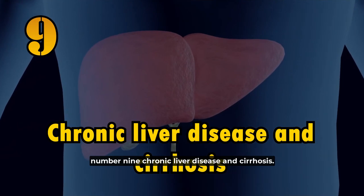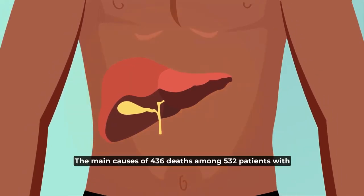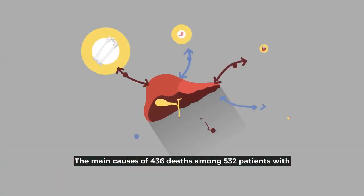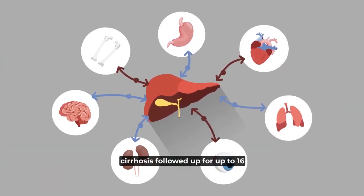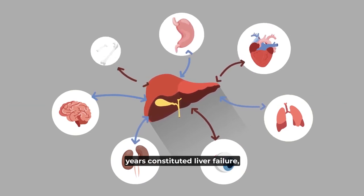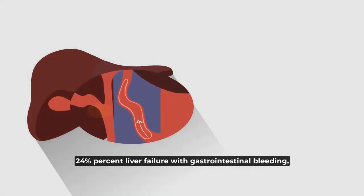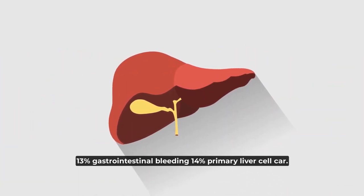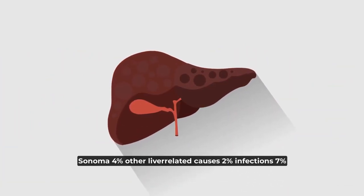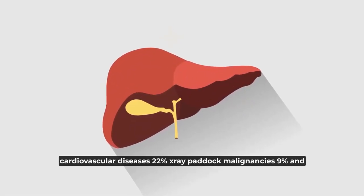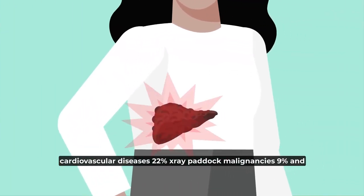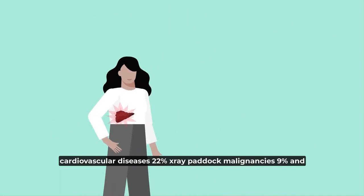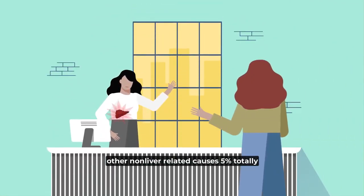Number 9: Chronic liver disease and cirrhosis. The main causes of 436 deaths among 532 patients with cirrhosis followed up for up to 16 years included liver failure (24%), liver failure with gastrointestinal bleeding (13%), gastrointestinal bleeding (14%), primary liver cell carcinoma (4%), other liver-related causes (2%), infections (7%), cardiovascular diseases (22%), extrahepatic malignancies (9%), and other non-liver-related causes (5%). In total, 57% died of liver-related causes.